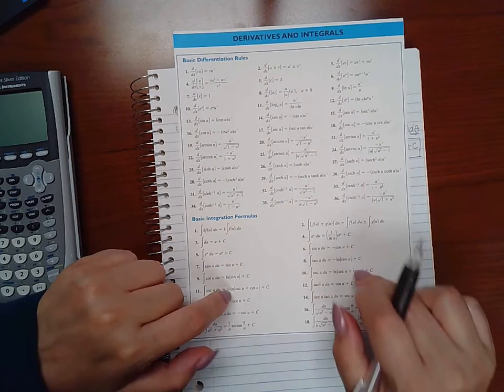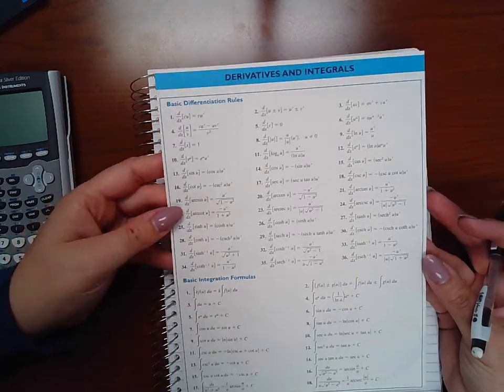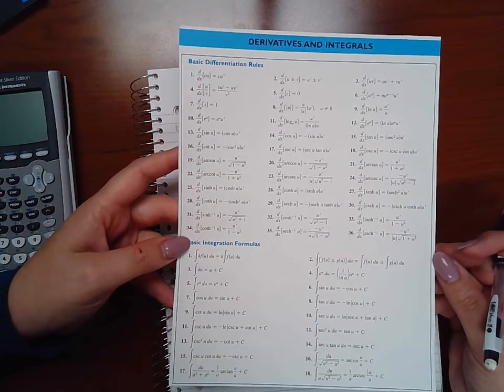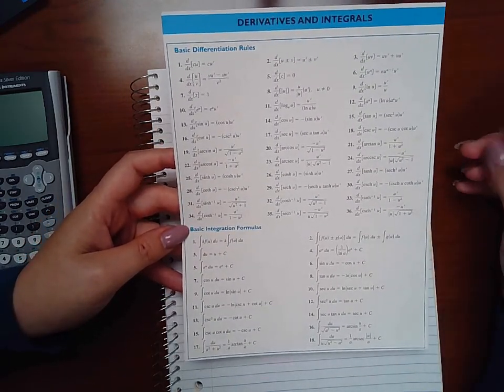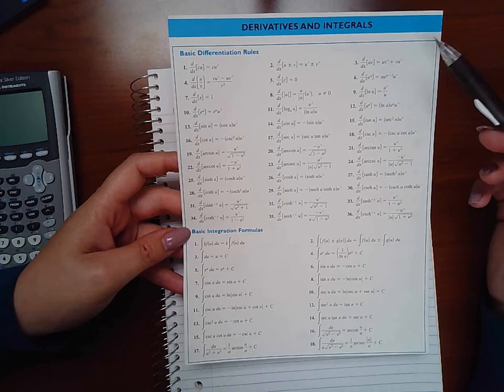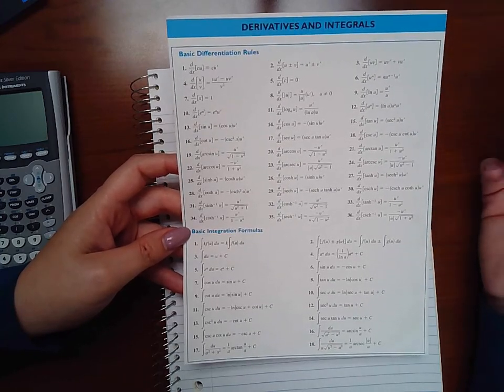Now this page that I have here is usually like the inside of the cover of the books if you have the paper books. But if you have the ebook, you can view this page inside the ebook. It's either in the appendix or it'll be one of the first things before the table of contents.